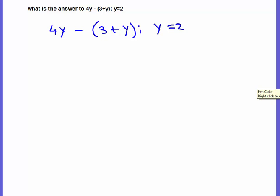What this means is, for every y you see, you're going to replace it with a 2. This 2 goes in for that y and that y.